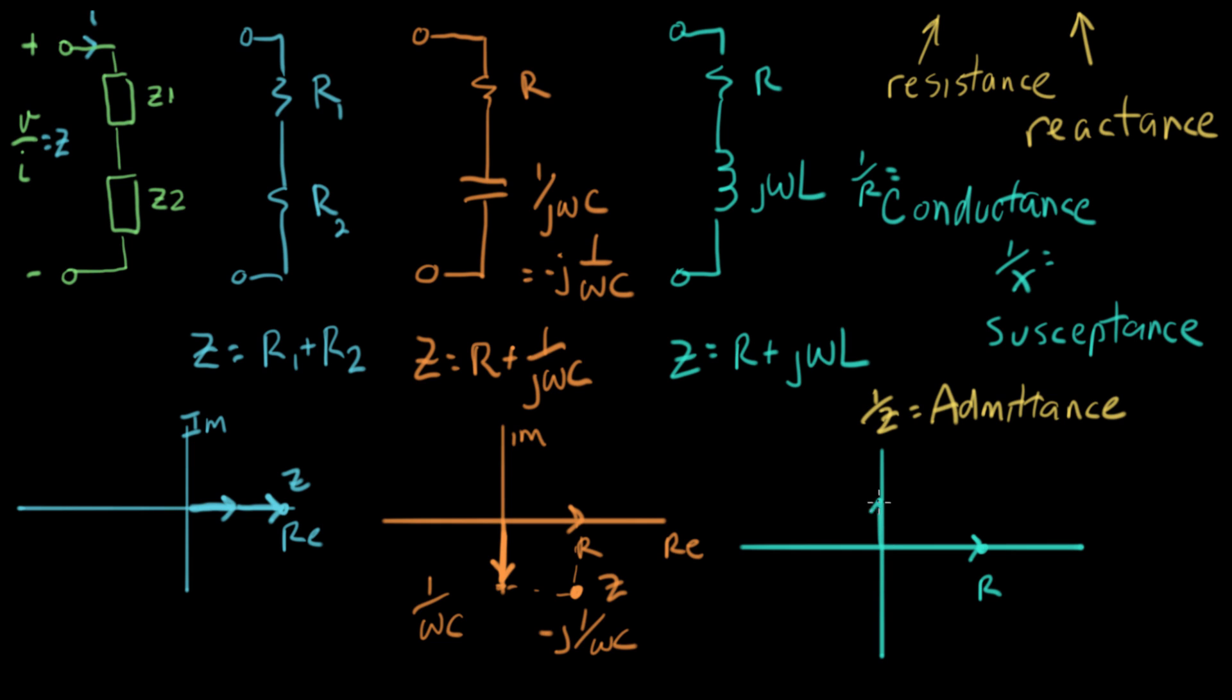So let's say L was kind of small. Let's say it goes right there. So that has a magnitude of omega L on the imaginary axis. And that'll give us a point. That'll be Z for that network.